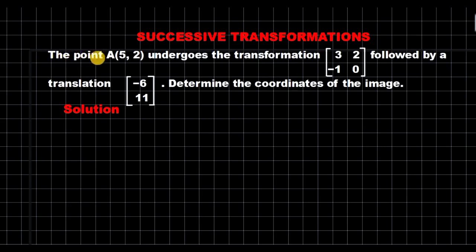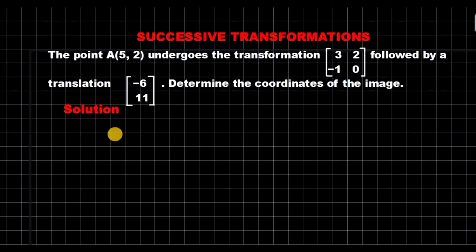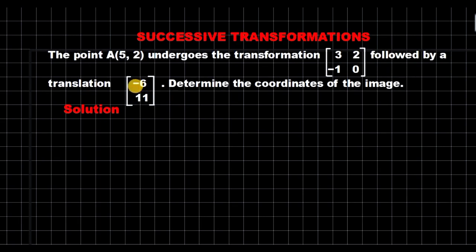The question reads: the point A(5, 2) undergoes the transformation represented by the matrix [3, 2, -1, 0], followed by a translation (-6, 11). Determine the coordinates of the image. The first thing we need to take note of here is that the question is about successive transformations, because we have the first transformation which is represented by this matrix, and then it's followed by another transformation which we are told is a translation, represented by the translation vector (-6, 11).